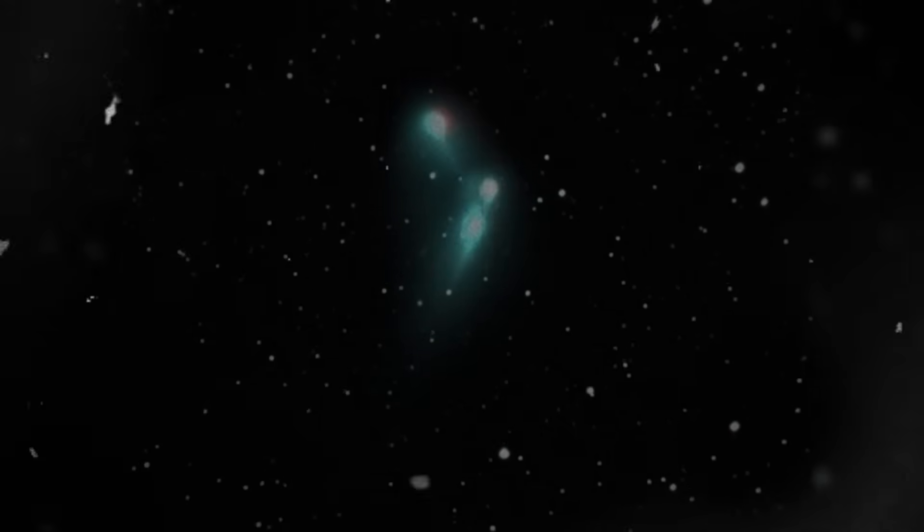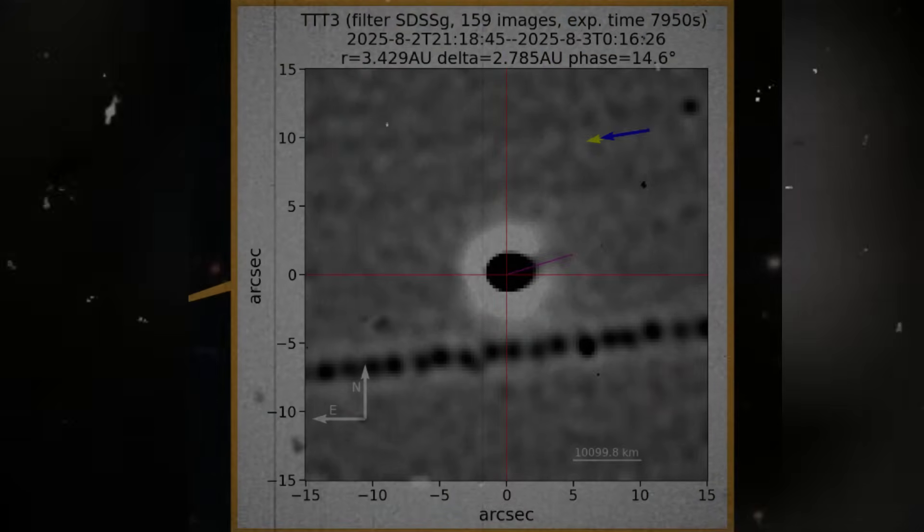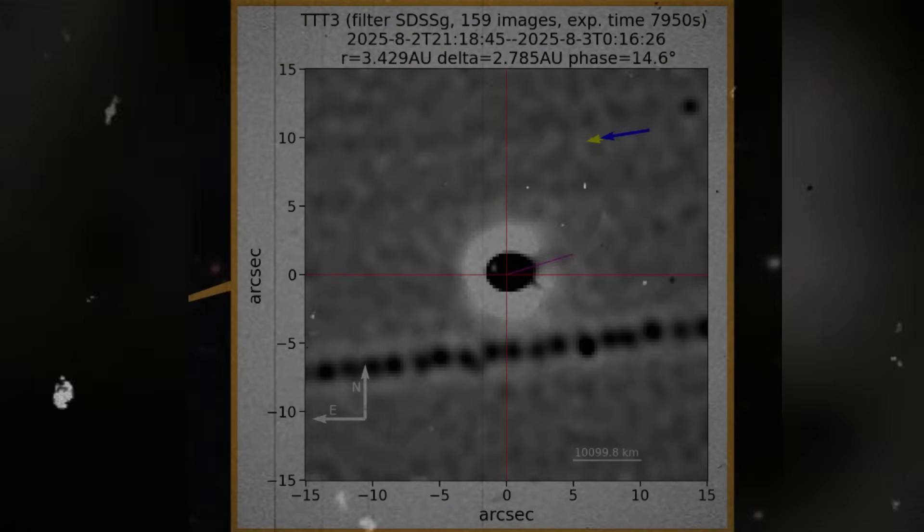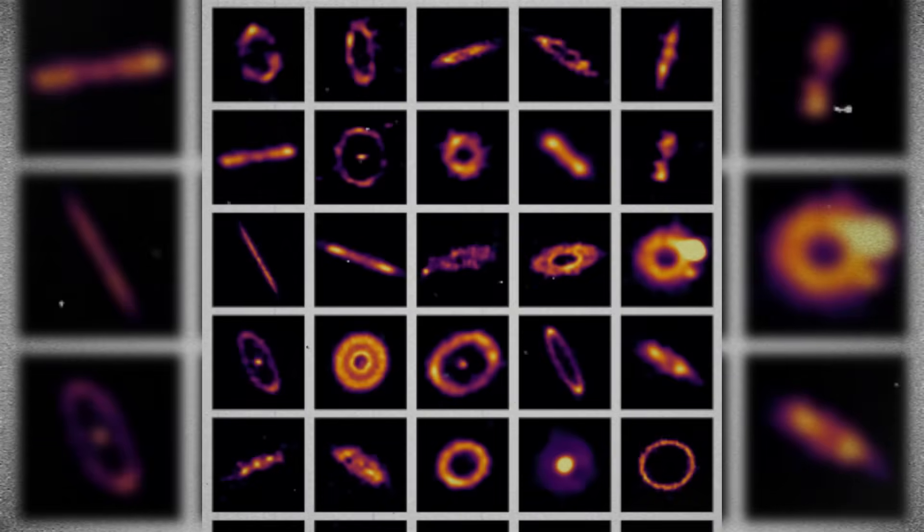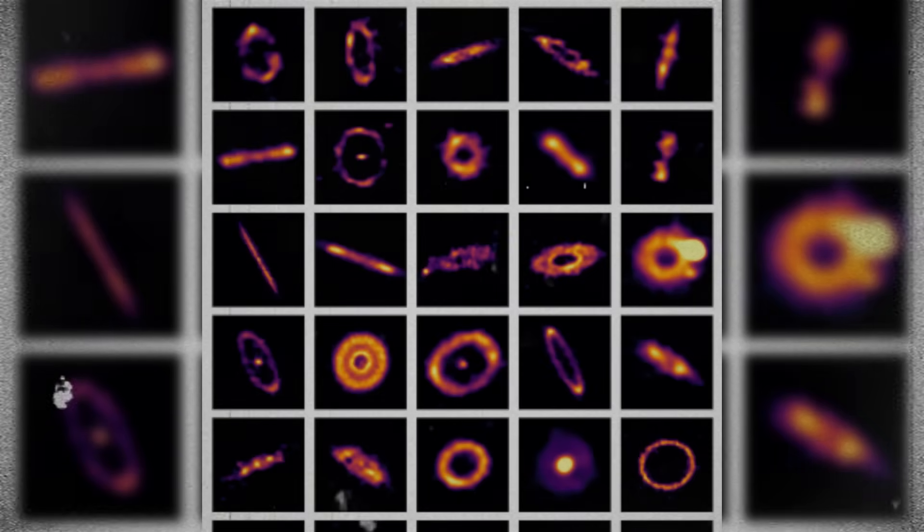They do not drift. They do not disperse. They do not behave like loose dust or gas. Instead, they form a stable ring around the object. Some researchers describe this as a boundary layer or a shell. Others believe these points might indicate stabilized gas clumps shaped by electromagnetic interactions. And a few, including analysts who studied earlier data, argue that the fixed pattern resembles small companion bodies held in coordinated motion around the nucleus.